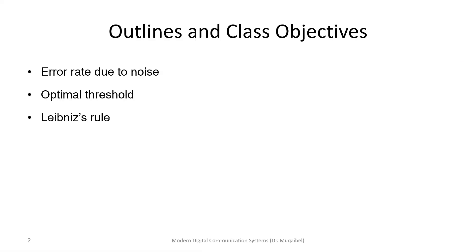The outline of the coverage would be the following: we have error rate due to noise, then optimal threshold and how to decide on the optimal threshold. And we'll have to use Leibniz rule.